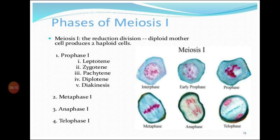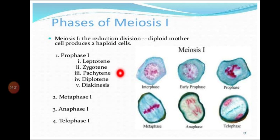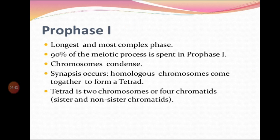Prophase 1 is divided into five sub-stages: leptotene, zygotene, pachytene, diplotene, and diakinesis. We are going to study all these sub-phases one by one in detail.